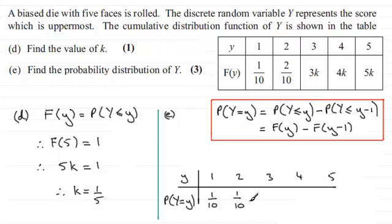Basically, what we're doing is F of any value minus F of the previous value. So when it comes to working out the probability of Y equals 3, it's going to be F(3) minus F(2), which is 3k minus two-tenths. Well, k is one-fifth, so that will be three-fifths minus two-tenths, which turns out to be four-tenths.